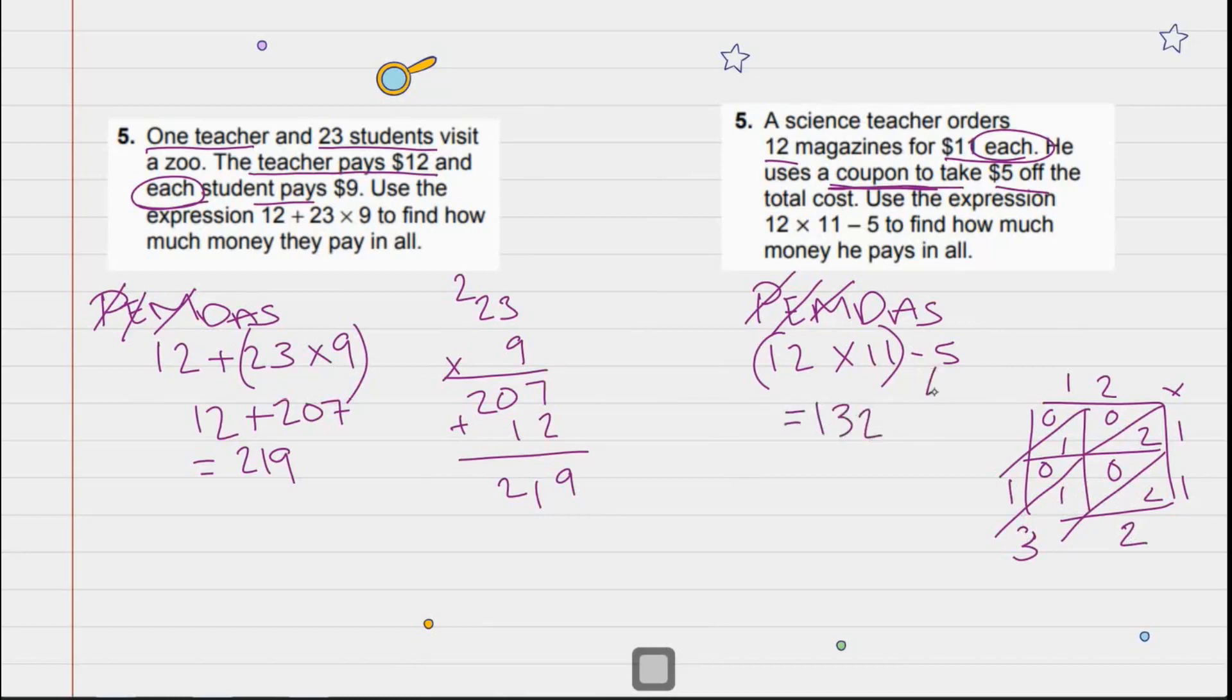We're going to bring down minus 5. So 132 - 5. The 2 is too small to take away that 5, so we're going to borrow. That becomes a 2, that is now a 12. 12, 11, 10, 9, 8, 7. And then we bring down everything else and we get 127. Very good.